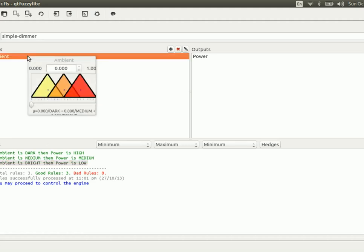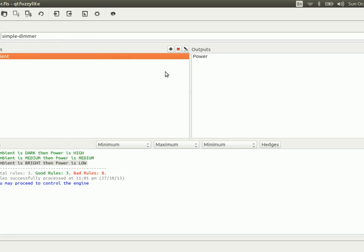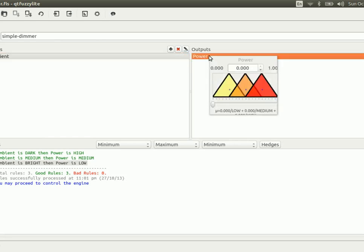So, we model the input variables using simple triangles, and they go between 0 and 1. And you can think of this as the values that you obtain from a light sensor. Now, the power of the bulb, of the light bulb, is modeled again using triangles, and it goes between 0 and 1.